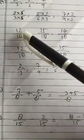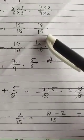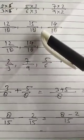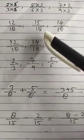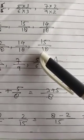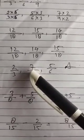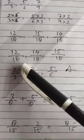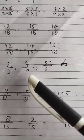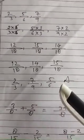After multiplying, you will get 12 upon 18, 15 upon 18, and 14 upon 18. Now all the denominators are the same, so by looking at the numerators you can identify which is greater and which is smaller. Arrange in ascending order: 12 upon 18, then 14 upon 18, then 15 upon 18. Putting back the original values: 2 upon 3, then 7 upon 9, then 5 upon 6. That is your answer.